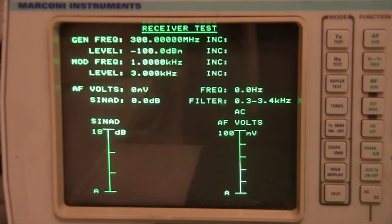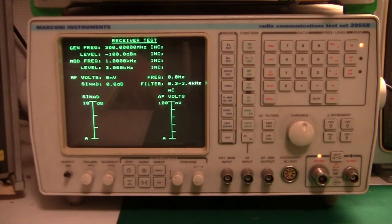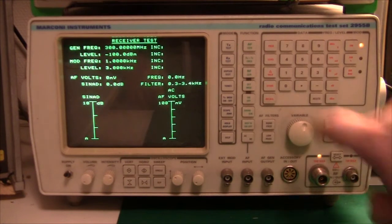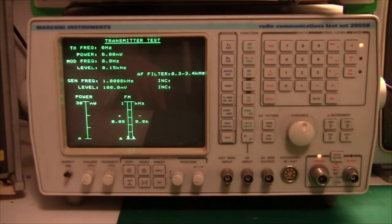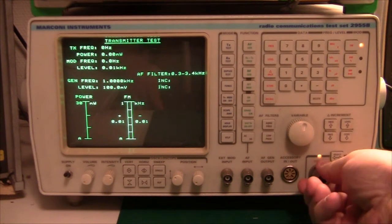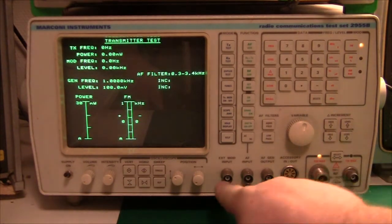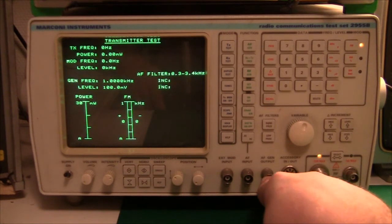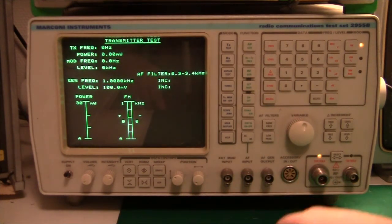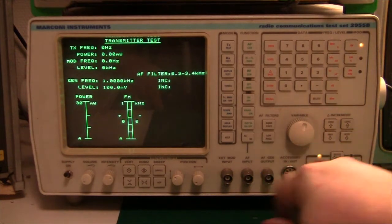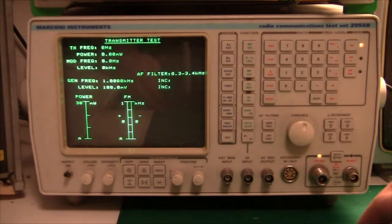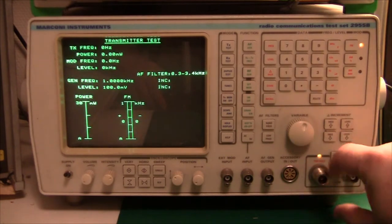It doesn't do quadrature amplitude modulation, which is a shame, but I think using some external modulator, we can get it to do that as well. So in the future, I think we'll have some fun with this machine. I find the user interface a little bit clunky, but basically what you can do is we can do transmitter tests. So we will connect the transmitter to this input down here and we will send out audio from the audio generator. So the audio comes out of this machine, goes into the transmitter and it goes back in here.